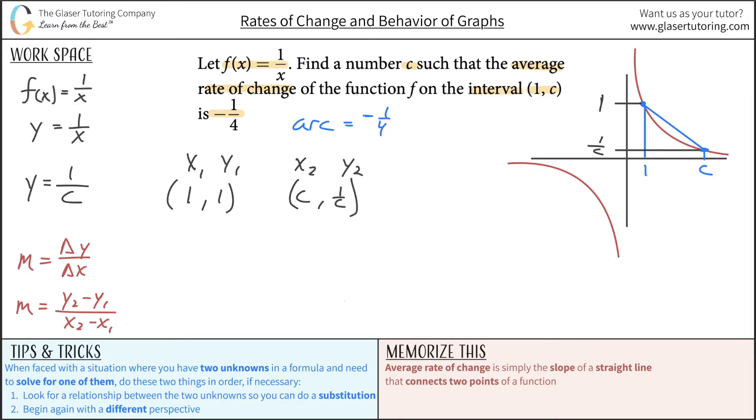And now what we realize is we can plug some stuff in. Right? I know what the slope is. That is the same thing as the average rate of change. Negative 1 4th. That's going to then be equal to my y2 value, which we said was 1 over c, minus then the y1 value, which is 1, divided now by my x2 value, which is c, minus then my x1 value, which is 1.